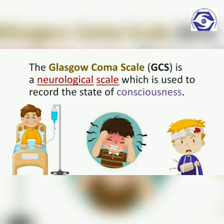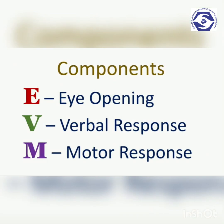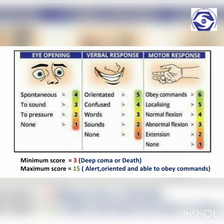Glasgow Coma Scale is a neurological scale used to record the state of consciousness in acute medical and trauma patients such as stroke or traumatic brain injury. In hospitals, it is used in monitoring patients in intensive care units. When monitoring the patient's conscious level, the functional state of the brain is assessed as a whole. Therefore, the GCS measures responses in three categories: eye opening, verbal response, and motor response.